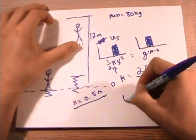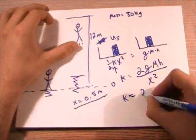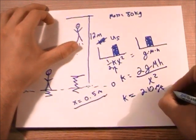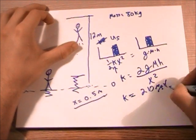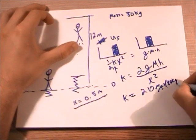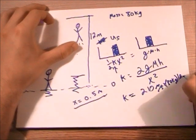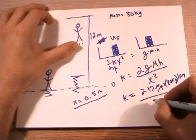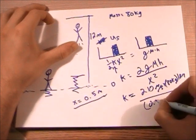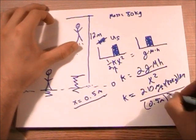So just plugging in numbers, k equals 2 times 10 meters per second squared times your mass, which is 80 kilograms, times your height, which is going to be 12 meters, all divided by your 0.5 meters squared.